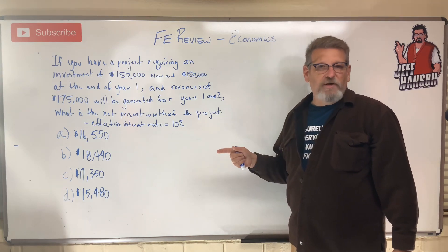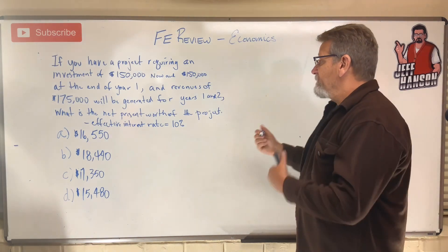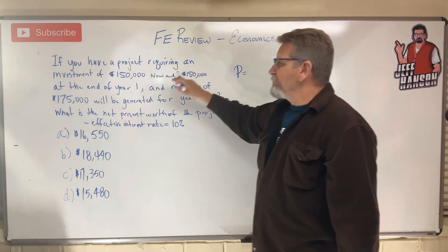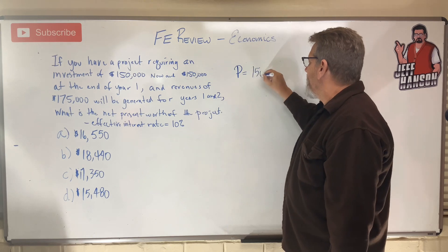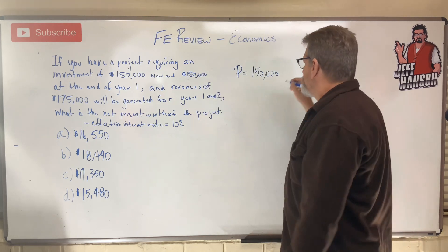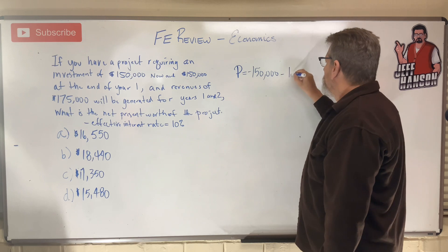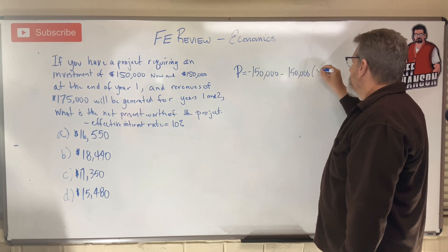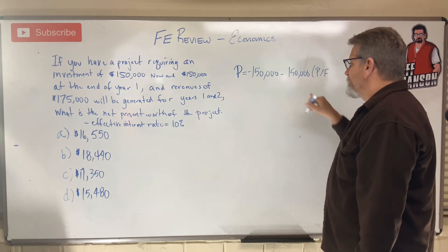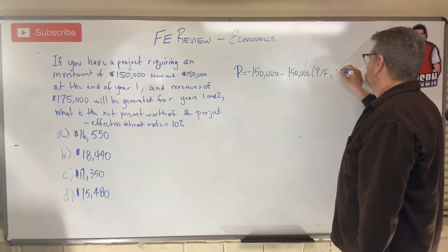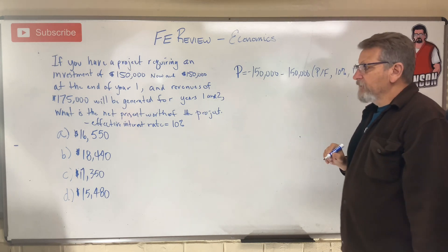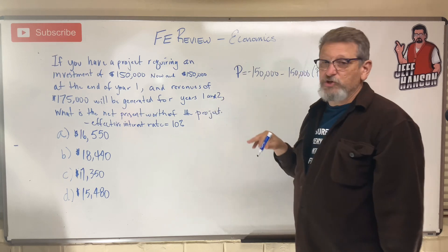Let's solve it. It's a present worth problem, so we're solving for P. First, we put $150,000 down right off the bat — that is a present cost. Then $150,000 at the end of year one — that sounds like a future value. So that's minus $150,000 times P given F at 10% for one year in the future.